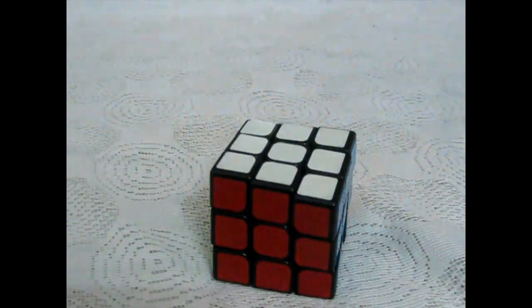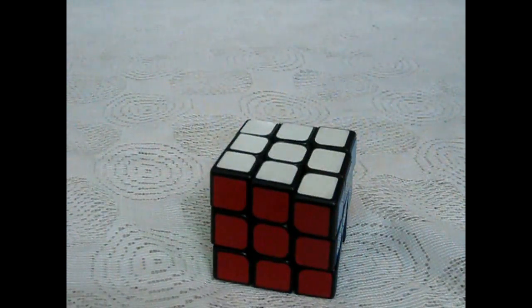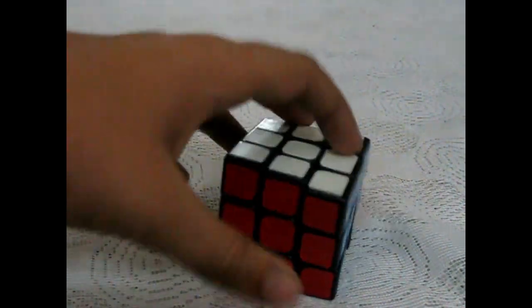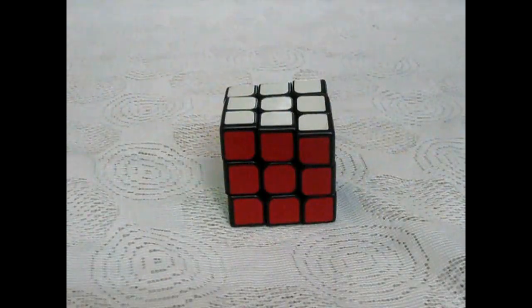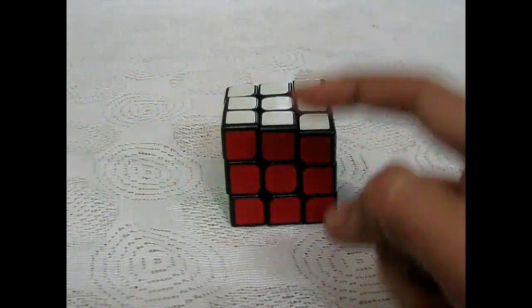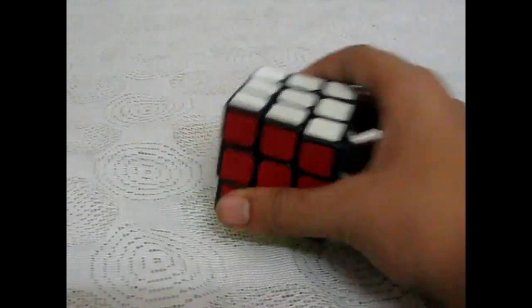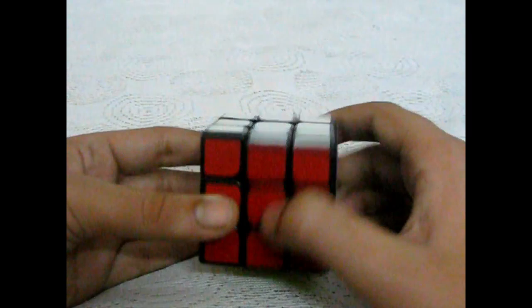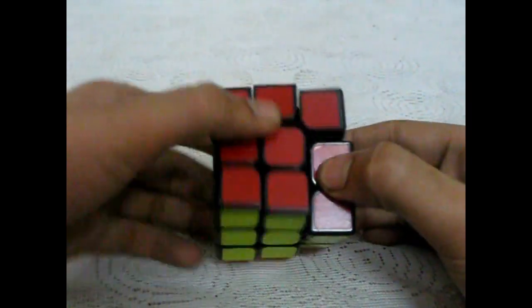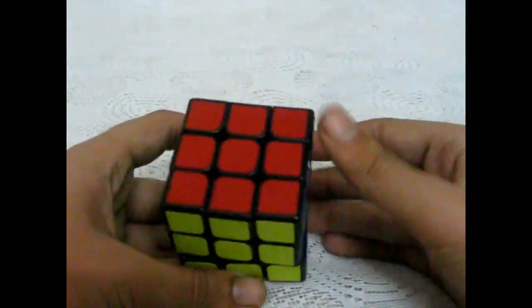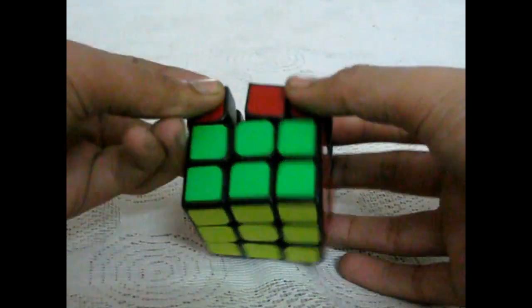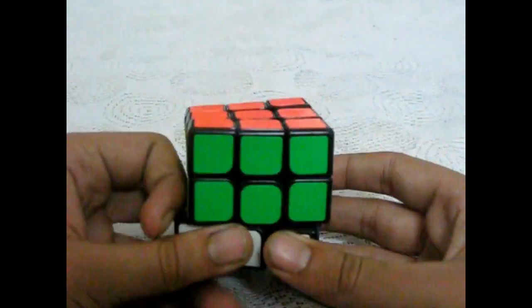Now we can move on to the last type of layer movement. That is the W movement or the wide movement. What you have to do in a wide movement is that you have to move that layer with its corresponding middle layer. For example, this would be RW, and this would be RW prime, similarly LW, FW, then UW, then this would be DW, and this would be BW.